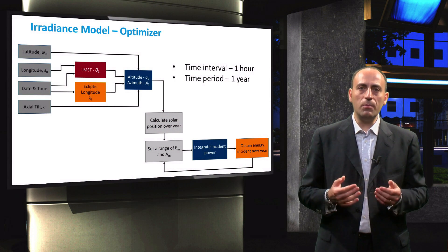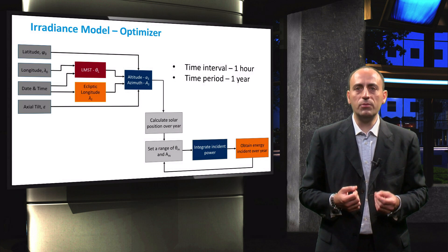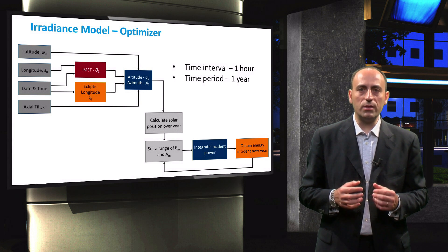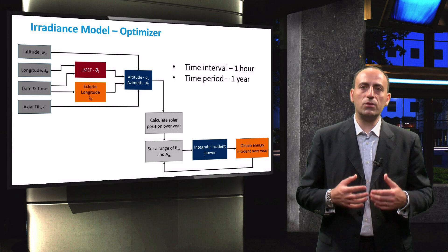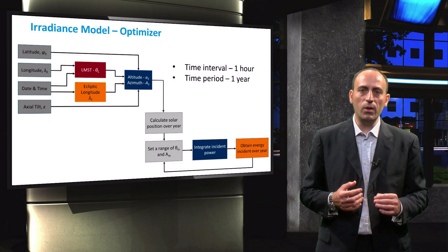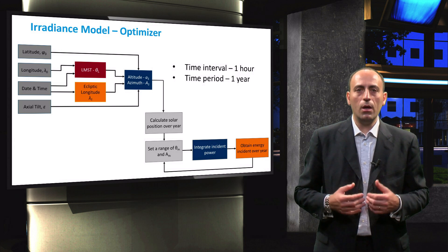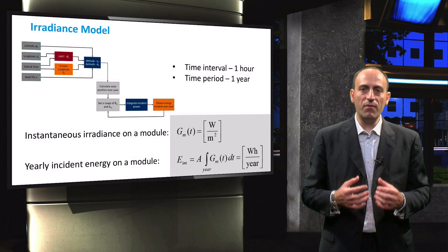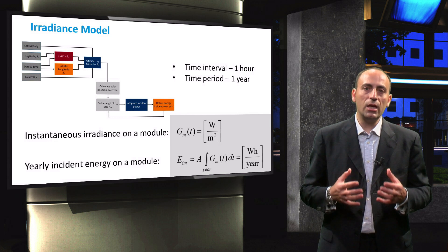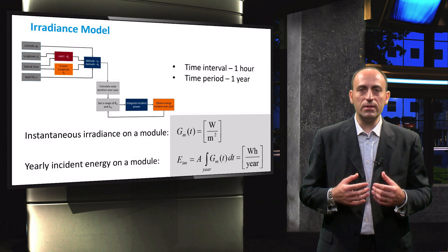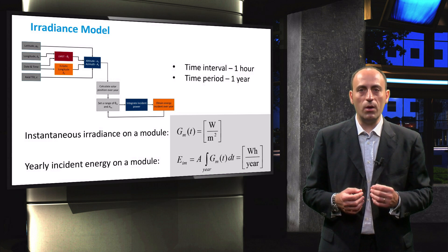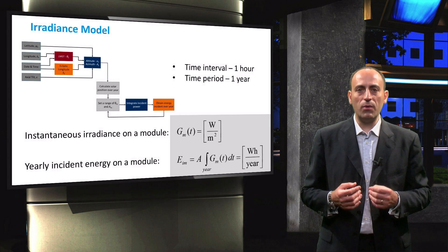The time period is usually chosen as a 1 year period. Next, the optimizer model is used to determine the optimum tilt angle and orientation of the PV module for that particular location. Both the direct and diffuse irradiance components along with the albedo effects are taken into account. From this, the total irradiance incident on the surface of the PV module is calculated for every interval of time. This instantaneous irradiance is given by GM and is denoted in watts per square meter. Integrating the GM values over the full time period, which is generally 1 year, gives the annual incident energy density. Multiplying this energy density by the surface area of the PV module gives the amount of energy incident on the PV module in 1 year. This is denoted by Eim and is expressed in watt-hours per year.